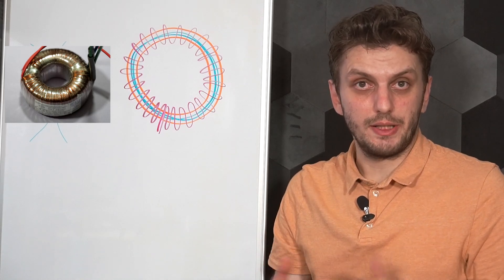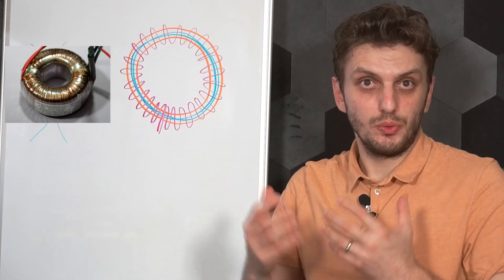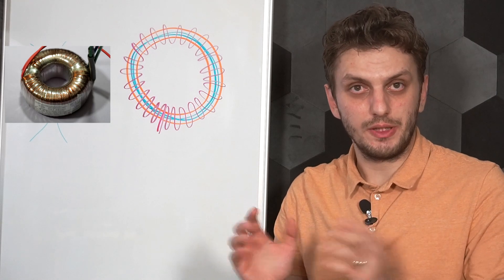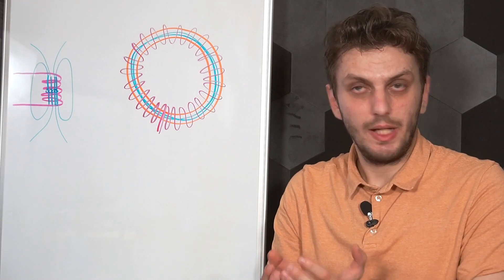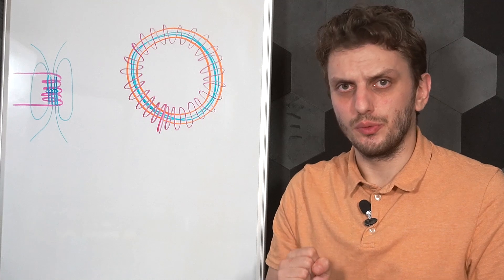The first thing to keep in mind about the toroid is that to confine the magnetic field, you need to cover it completely with your coil. Let's see what happens if you don't do that.